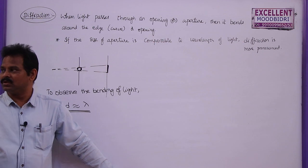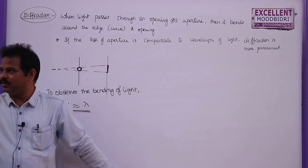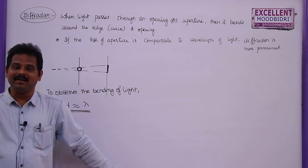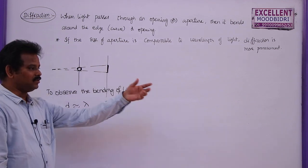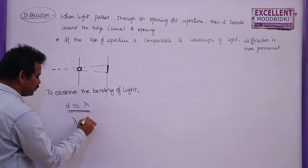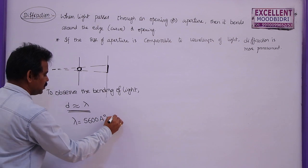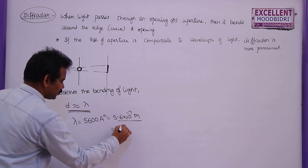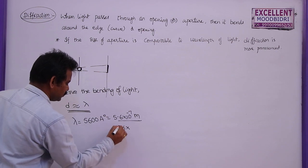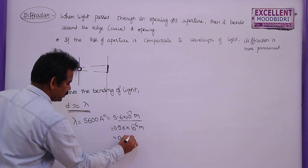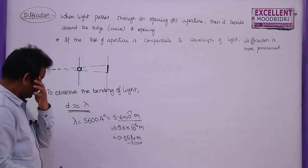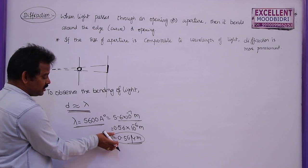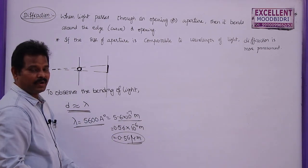For example, if you take rooms with some windows or doors, the size of all these windows or doors are in meters and the wavelength of the sound wave is also in meters. That's why sound can bend very easily on the edges of these windows and doors. But light has an average wavelength of yellow light of 5600 angstroms, or 5.6 × 10⁻⁷ meters, which is 0.56 micrometers. So if visible light whose average wavelength is this much passes through a slit whose size is only in micrometers, then we can observe the bending of light very easily.